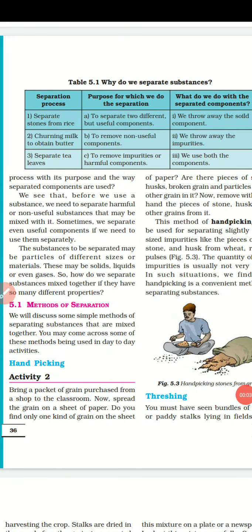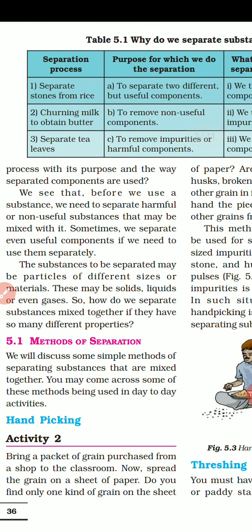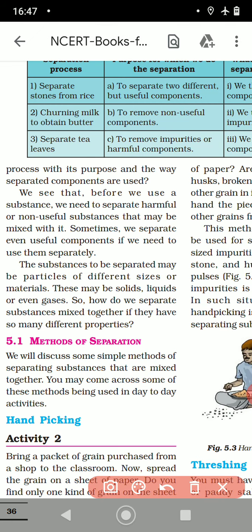Children, I hope you are done with the table. This is very easy. First one: let me discuss separating stones from rice. Why do we separate stones from rice? To remove the impurities, harmful components, or non-useful components. To separate two different but useful components. The stone in rice is not a useful thing, so the first reason will be to remove the non-useful components.